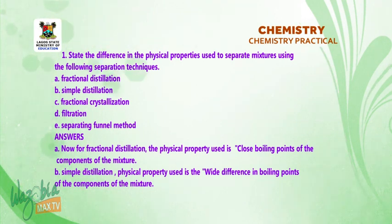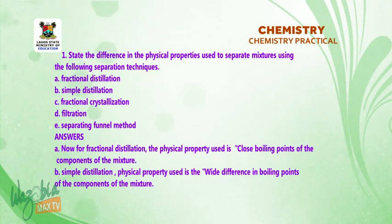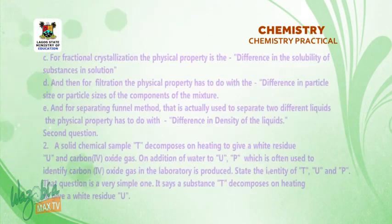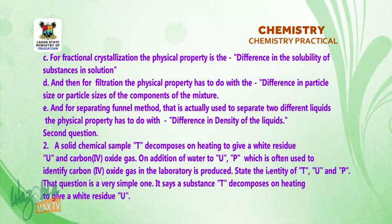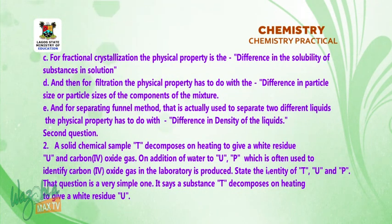For fractional distillation, the physical property used is closeness in the boiling points of the components of the mixture. For simple distillation, the physical property used is the wide difference in boiling points of the components of the mixture. For fractional crystallization, the physical property is the difference in the solubility of the substances in solution. For filtration, the physical property has to do with difference in the particle sizes of the components of the mixture.